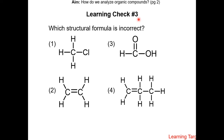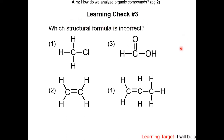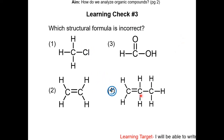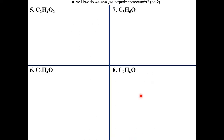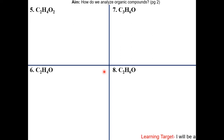Learning check three: which structural formula is incorrect? Pause the video, resume when completed. The answer is choice 4, because this carbon has five bonds, which is impossible. Try to do questions 5 to 8 on your own. Pause the video, resume when completed. Here are the answers.